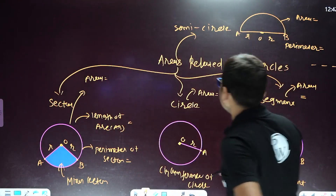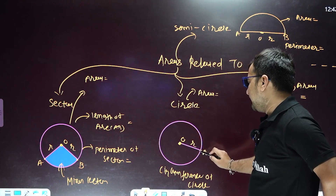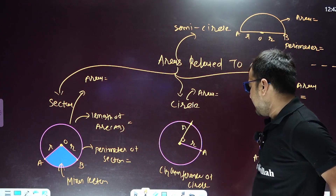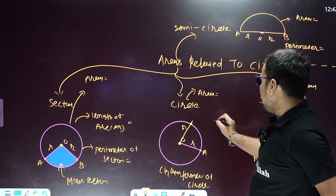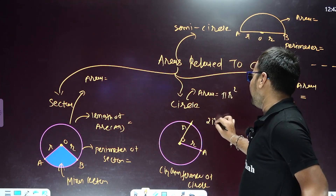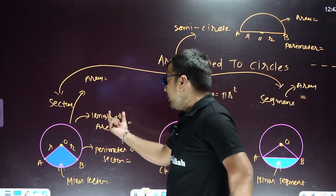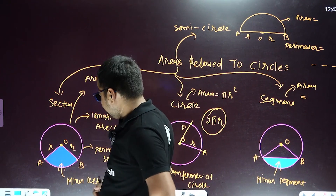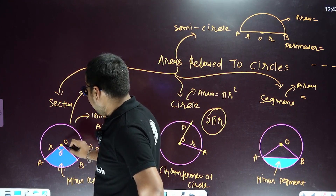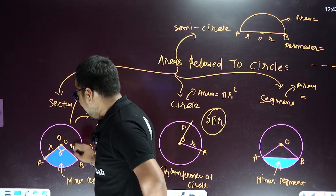Next chapter: Areas Related to Circle. The center to any point on the circle is known as radius r. The area of the circle is pi r squared. The circumference of the circle is 2 pi r. Now, a sector makes an angle theta here.